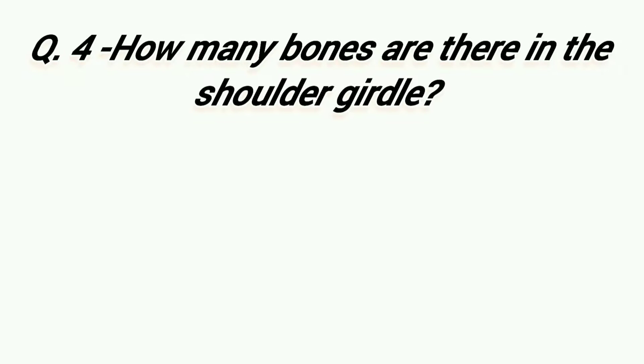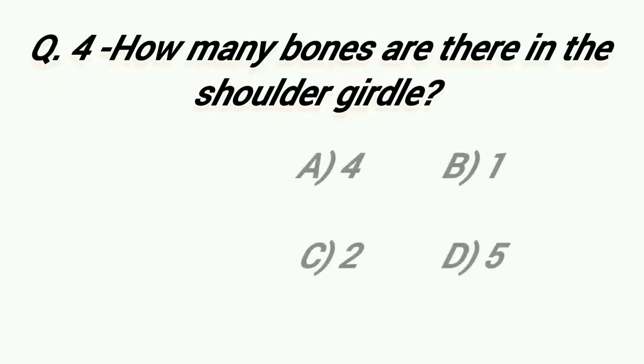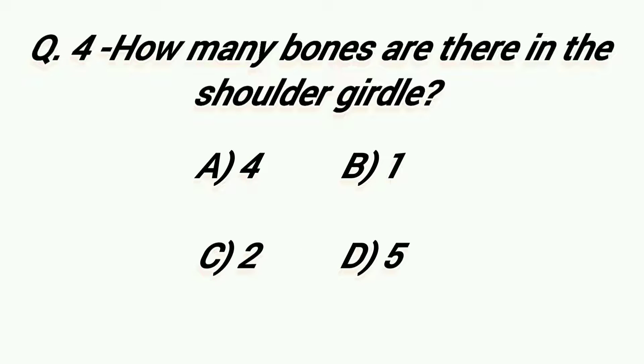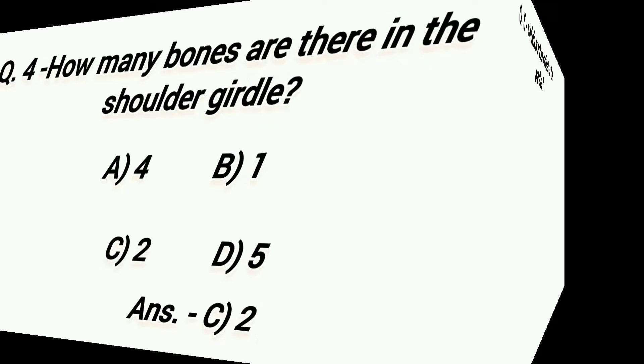How many bones are there in the shoulder girdle? Option A: 4, Option B: 1, Option C: 2, Option D: 5. Right answer is Option C, 2.